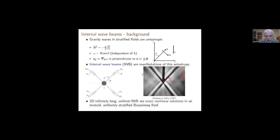Let's start with a little background, which is probably not necessary for this audience. For gravity waves — I'm not including rotation in this slide, but rotation will be included in the analysis — the important thing is the anisotropy of internal waves and the fact that the wave frequency omega depends only on the angle of inclination of the wave vector to the vertical. Therefore, the group velocity is orthogonal to the phase velocity.